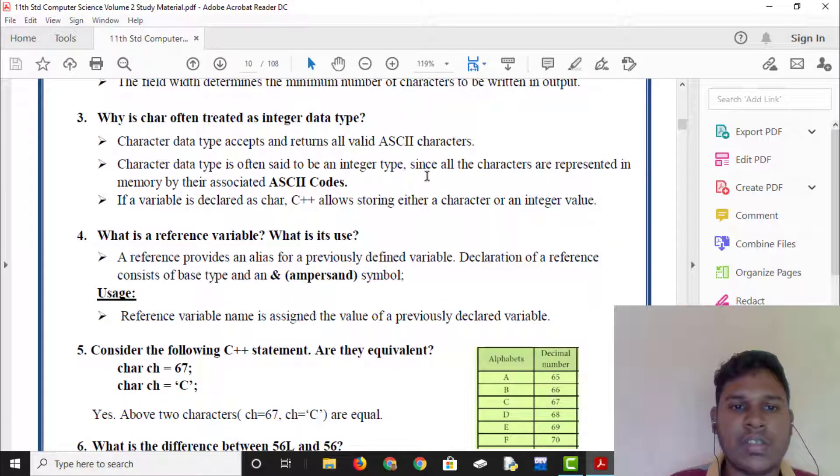Why is char often treated as integer data type? The character data type accepts and returns all valid ASCII characters. Character data type is used to set the width of the field. Since all the characters are represented in memory by their associated ASCII codes, the variable is declared as character. C++ allows storing either a character or an integer value.